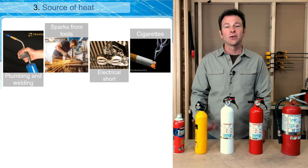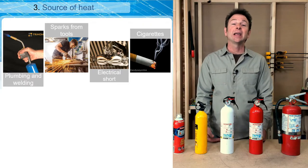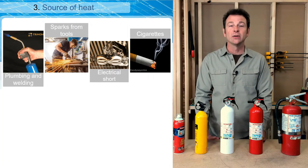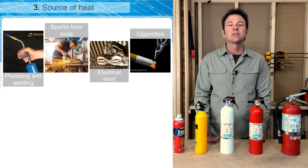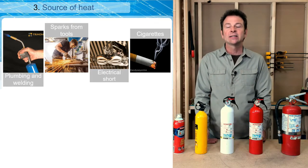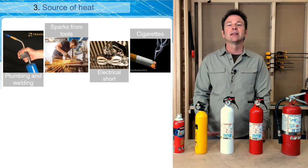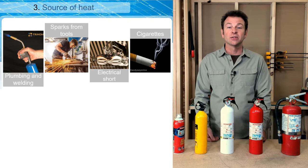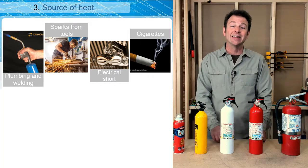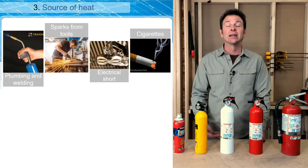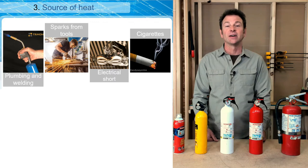A source of heat is the third element needed for fire. That can be anything from a plumber's torch or welding happening on site, to sparks from tools making contact with metal — that's all it takes. It could be an electrical short from overloading a circuit or a circuit failure. It could even be as simple as a cigarette that was thrown into a spot that then causes a fire.